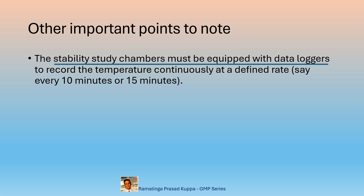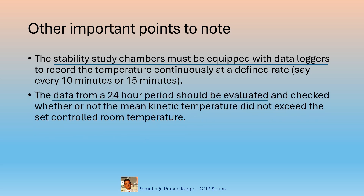This feature should be installed in the stability chambers to establish the recording of temperature with a definite frequency. The data from a 24-hour period should be evaluated and checked whether or not the mean kinetic temperature did not exceed the set controlled room temperature. It is necessary to take a printout of the data every day and evaluate for any excursions beyond 25 degrees Celsius plus or minus 2 degrees to get the mean kinetic temperature value. I hope that the important feature of mean kinetic temperature for stability study conditions is understood well.